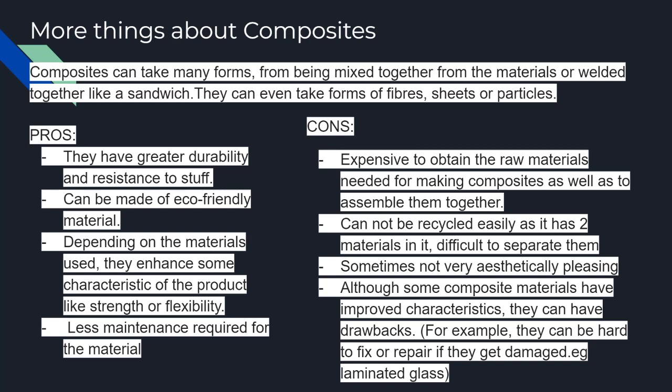Composites can also be hard to repair because they are two materials put together, making it difficult to distinguish the individual materials. Therefore, if one material breaks or gets damaged, it is hard to repair. An example of this is laminated glass — if it breaks, the plastic layer will hold the glass together.